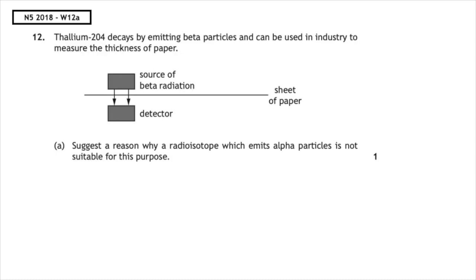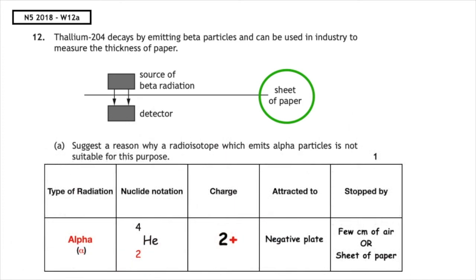This past paper question is from National 5, 2018, written question 12A. Thallium-204 decays by emitting beta particles and can be used in industry to measure the thickness of paper. The question asks: suggest a reason why a radioisotope which emits alpha particles is not suitable for this purpose. Alpha particles are stopped by paper, so they would not penetrate the paper and therefore could not be used to measure its thickness.